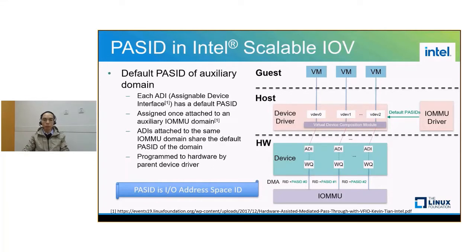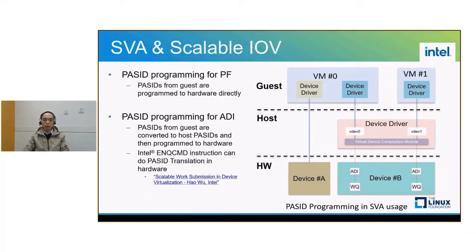This is also the base of PASID management in software. Since SVA and SIOV are both based on PASID, can they co-exist? The answer is yes, since they are orthogonal IO technologies. For example, we can set up guest SVA on assigned ADIs. The guest just needs to follow the normal steps for SVA setup. However, there is still a difference in PASID programming between physical functions and ADIs. For physical functions, PASIDs from the guest are programmed to hardware directly. While for ADIs, PASID programming should be mediated by the host.